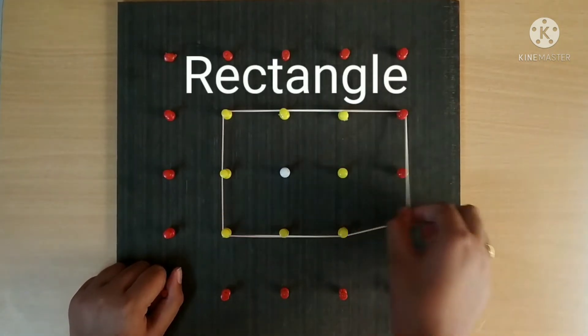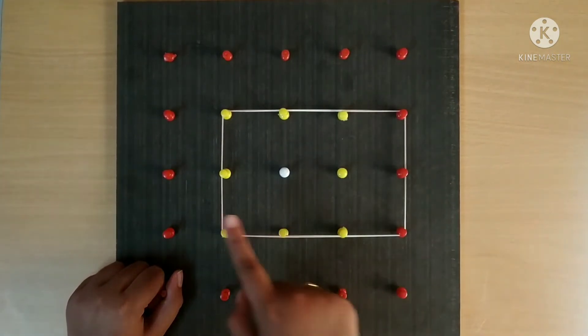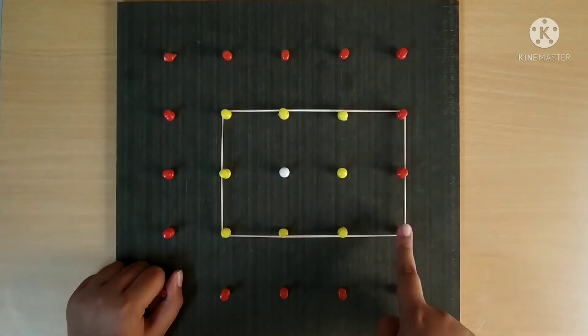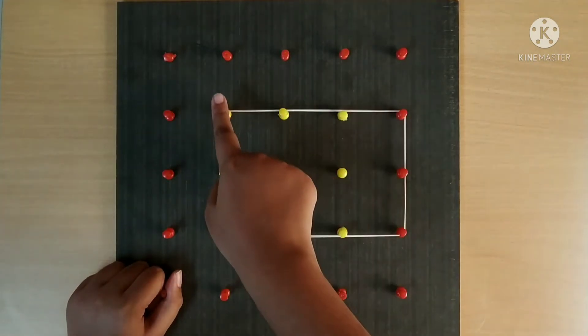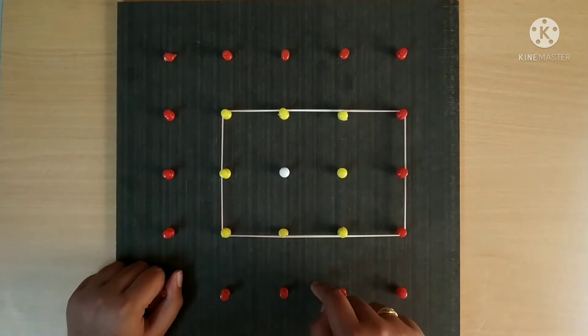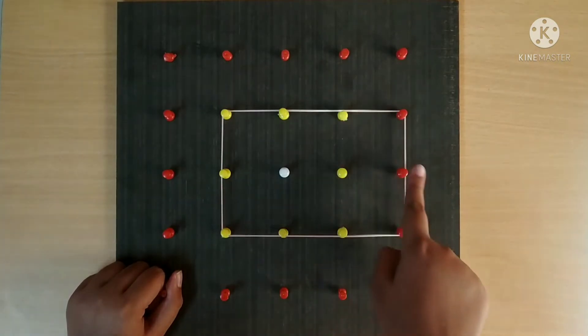Rectangle. A rectangle has 4 sides, 4 vertices. The main property of rectangle is its opposite sides are equal.